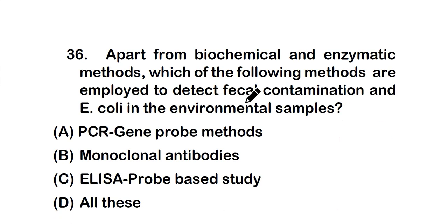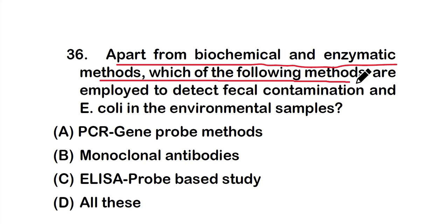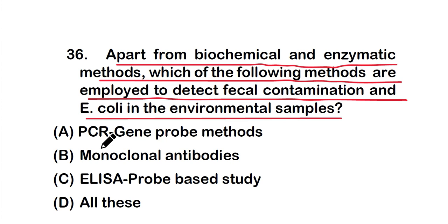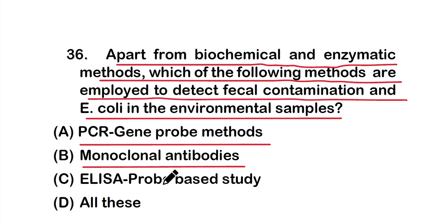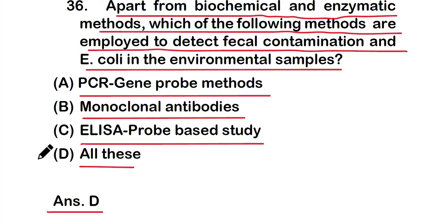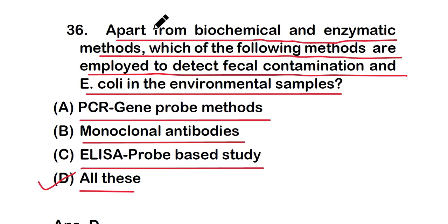Question number 36: Apart from biochemical and enzymatic methods, which of the following methods are employed to detect fecal contamination and E. coli in environmental samples? Options: A) PCR gene probe methods, B) monoclonal antibodies, C) ELISA probe-based study, or D) all of these. The right answer is option D — all of these methods are employed to detect fecal contamination and E. coli in environmental samples.